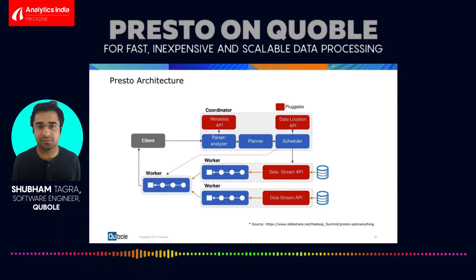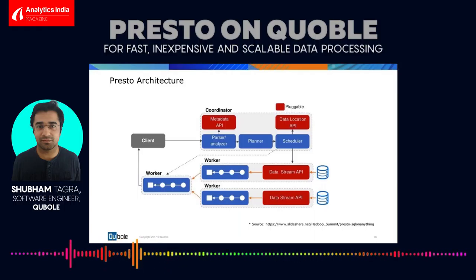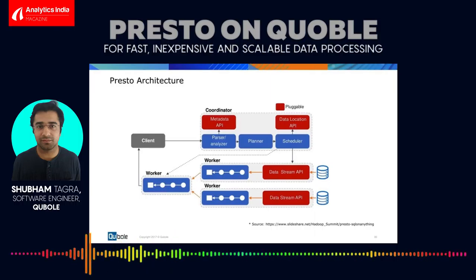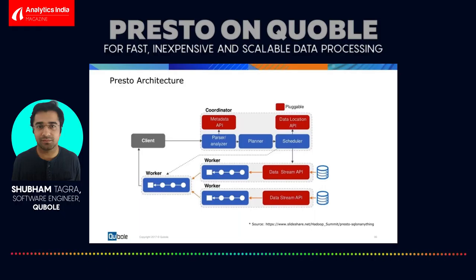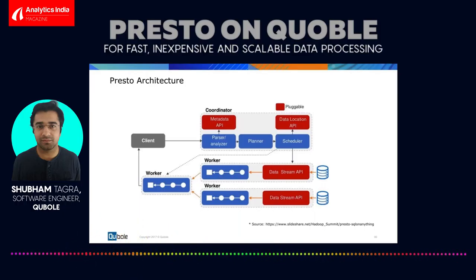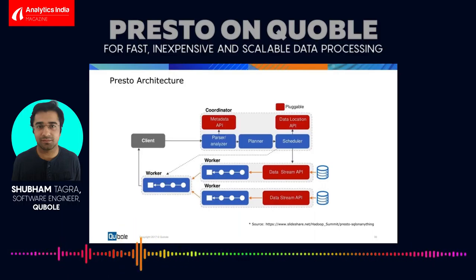Let's briefly touch on the Presto architecture. It's very similar to Hadoop at a high level: you have one special machine called the coordinator, and then multiple worker nodes which the coordinator manages and submits jobs to. The client connects to the coordinator and submits a query. A major difference from Hadoop is that Presto is tailored only for SQL — it's not a generic execution system. The query is parsed, analyzed, and a plan is generated, which is then fragmented into multiple tasks and scheduled across worker nodes.